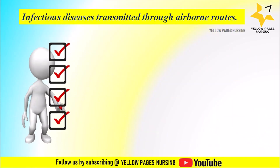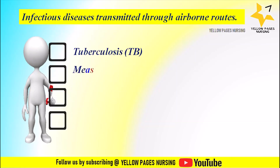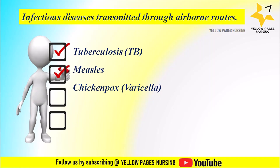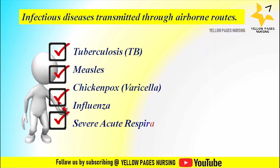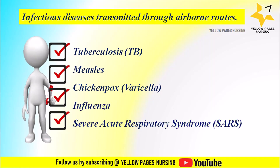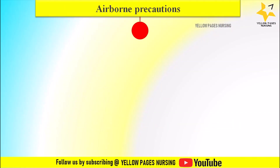Infectious diseases transmitted through airborne routes include tuberculosis, measles, chickenpox, influenza, and severe acute respiratory syndrome. Now let's discuss some precautions which can prevent airborne transmission.